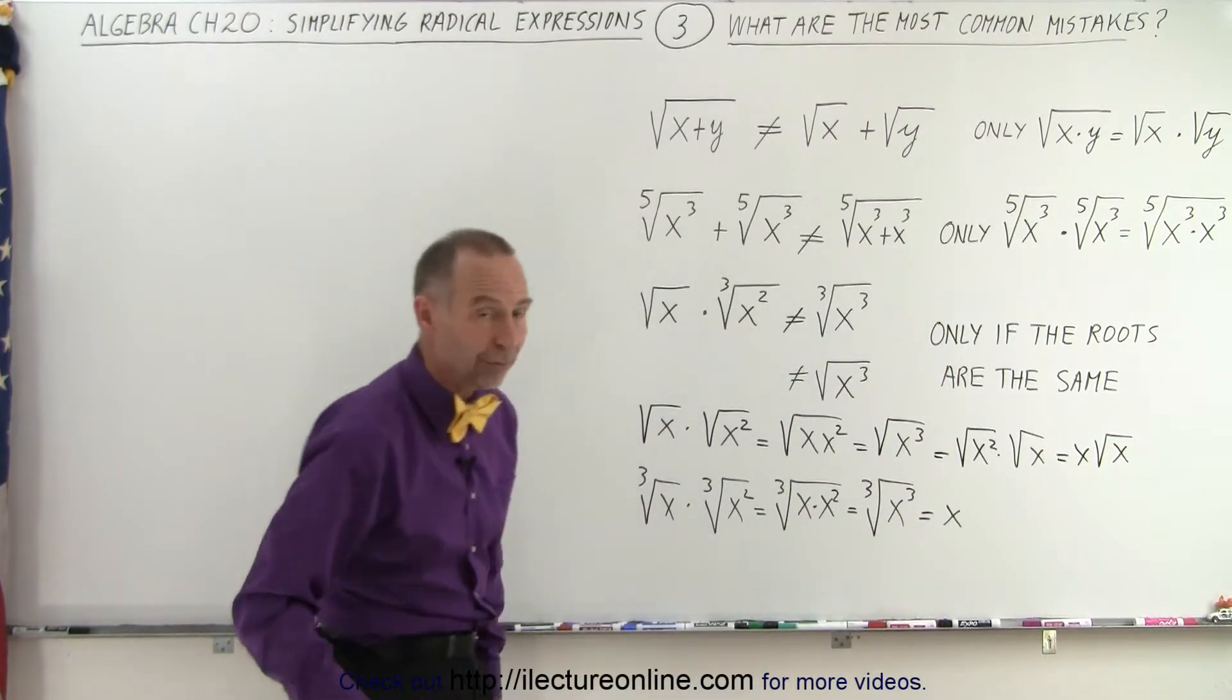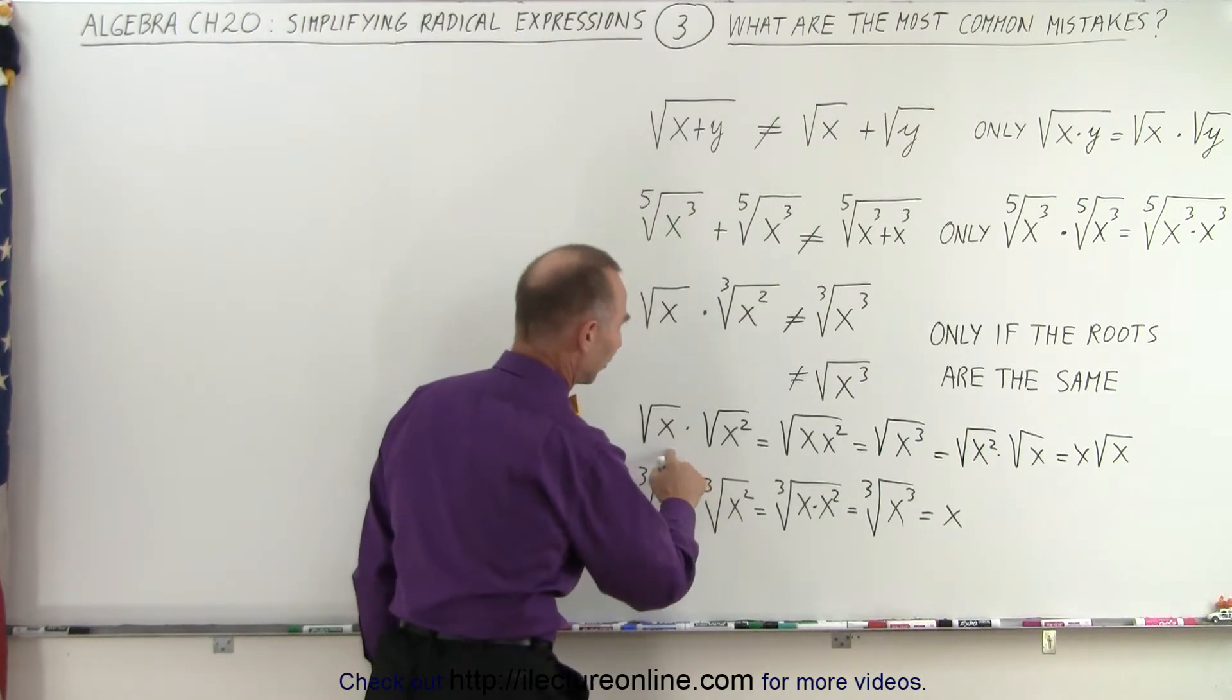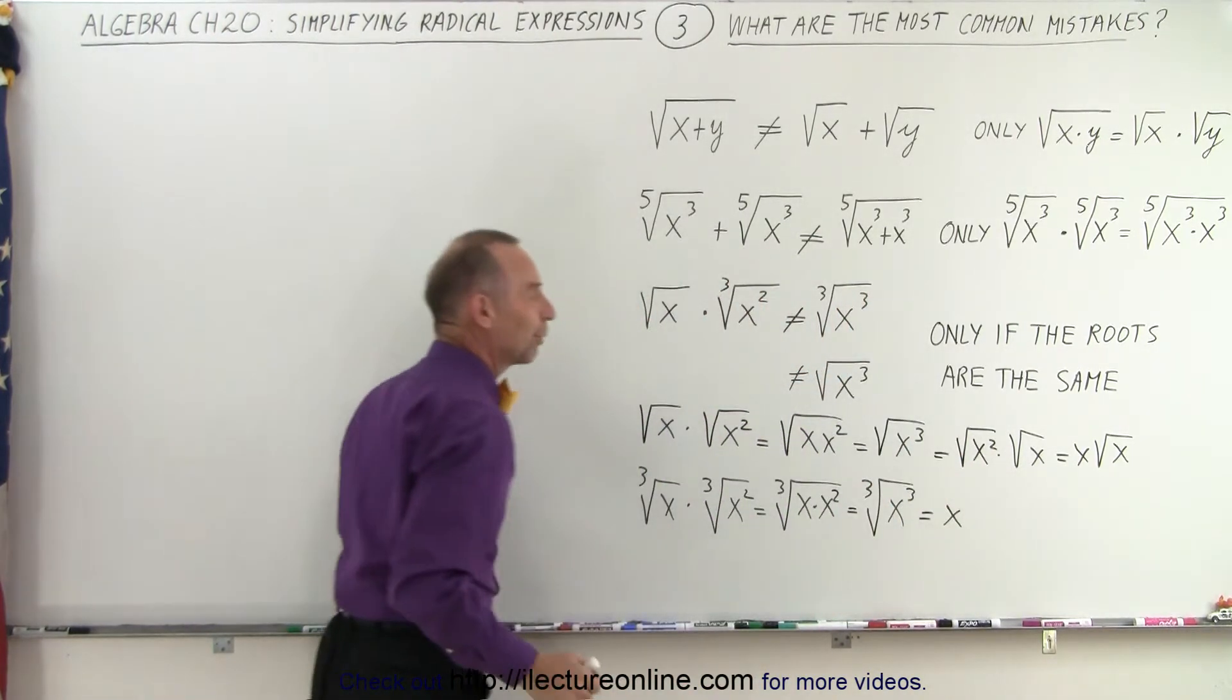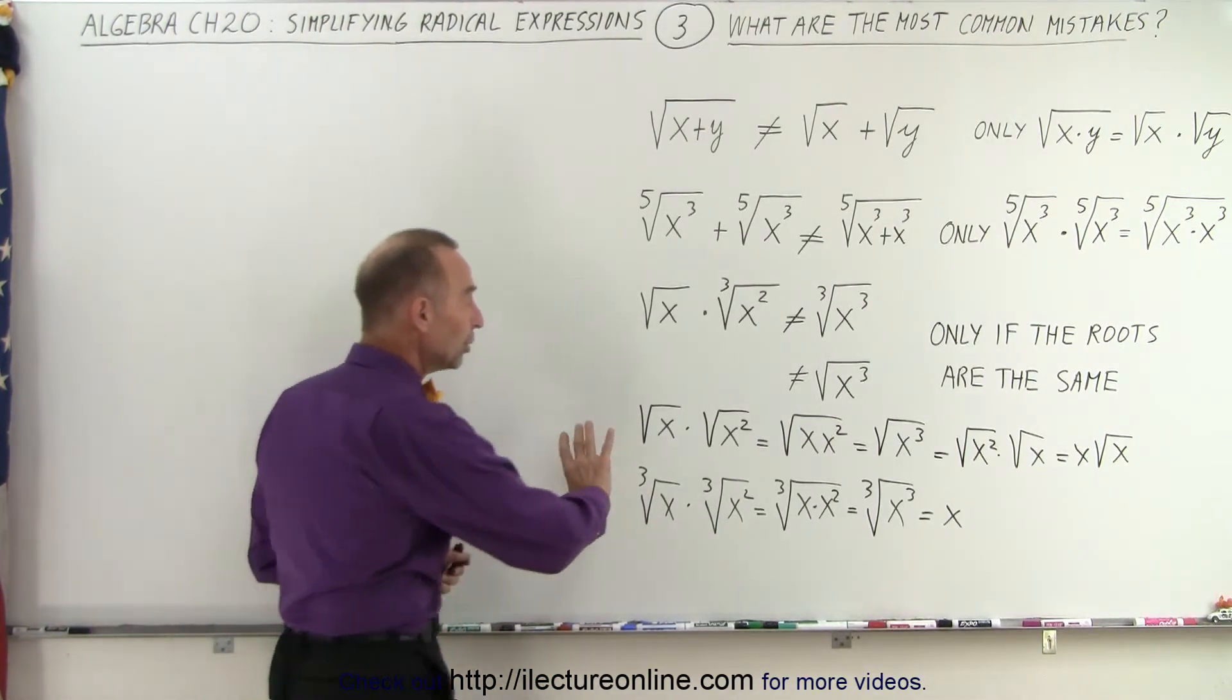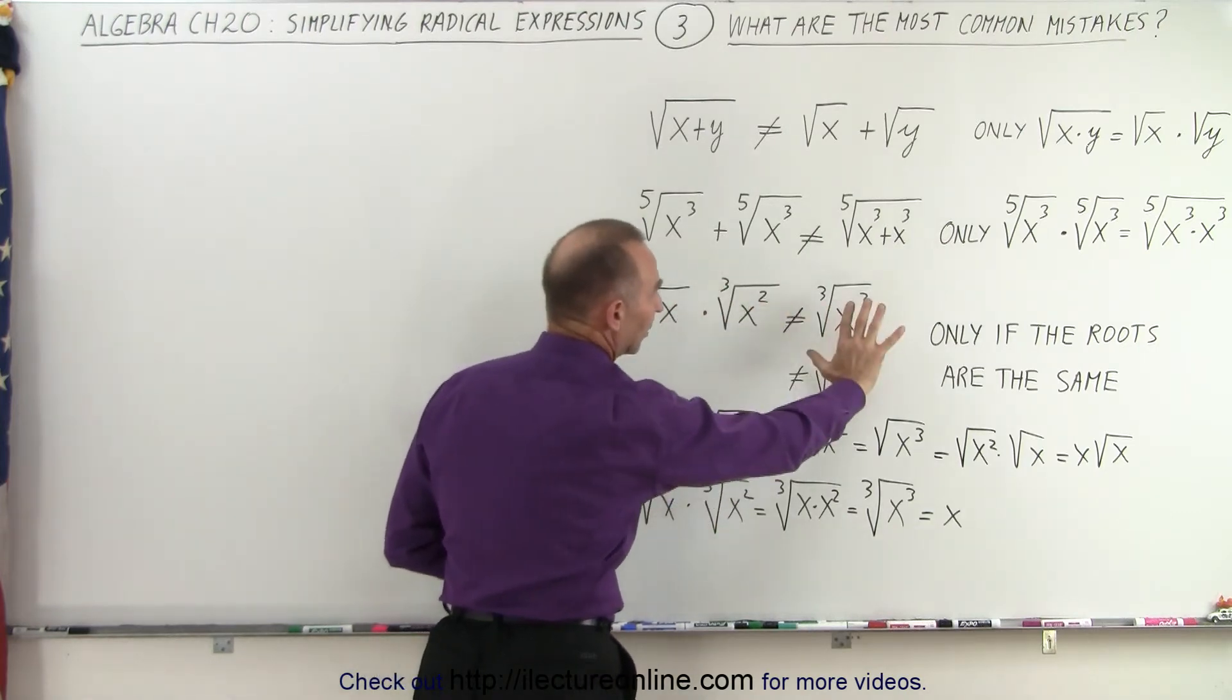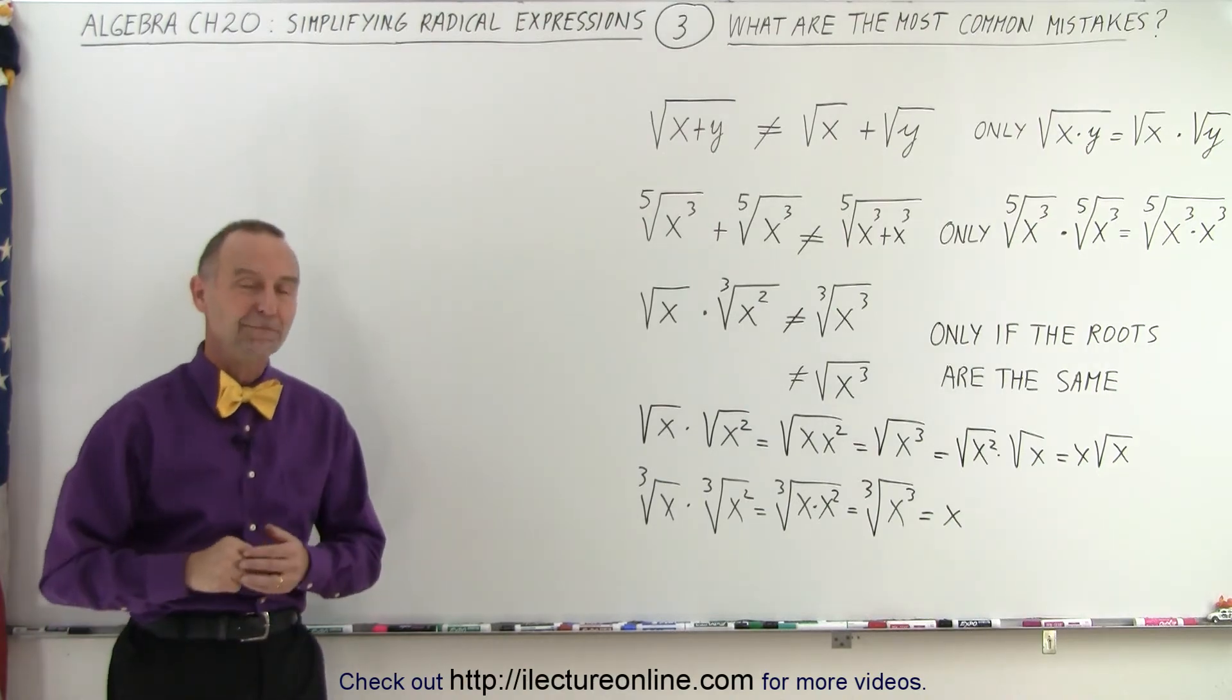So again, you can simplify it further to writing it like that. Notice we came full circle. We started with this, we ended with that, and then we simplify just the square root of x squared. But at least you can see the rules that you can only do these kinds of things when the roots are the same. When the roots are different, you cannot touch it. They must be the same. And that is how it's done.